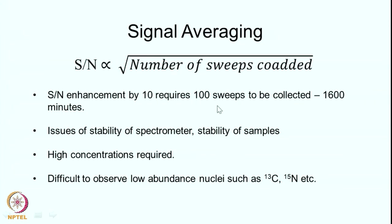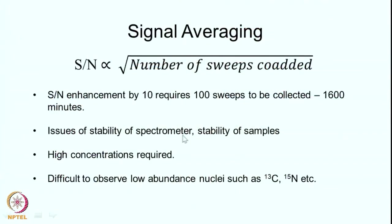This puts a lot of pressure on your spectrometer conditions — the spectrometer has to be stable for that long, the current and field should not vary, and samples have to remain stable. If signal-to-noise is very poor, one would need very high concentrations of samples. But high concentration requires the sample to be soluble. If solubility is low, high concentrations cannot be achieved, and it becomes very difficult to observe low-abundance nuclei such as carbon-13 (1.1% natural abundance) and nitrogen-15 (0.37% natural abundance).